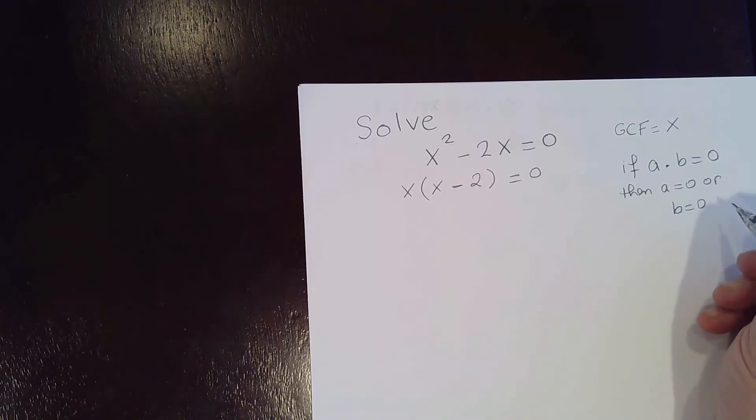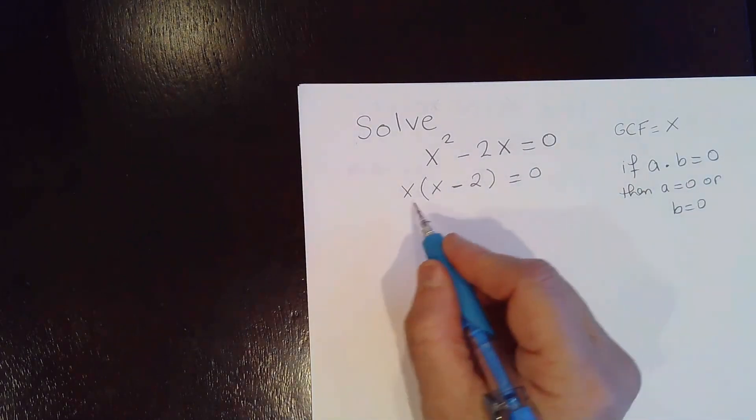Then a equal to 0 or b equal to 0. That makes sense, right? If you multiply 0 by any number, that would give me 0.